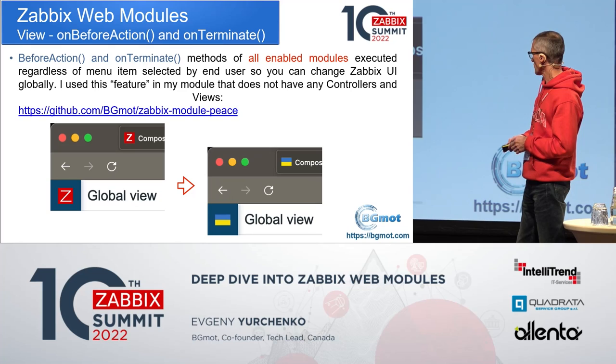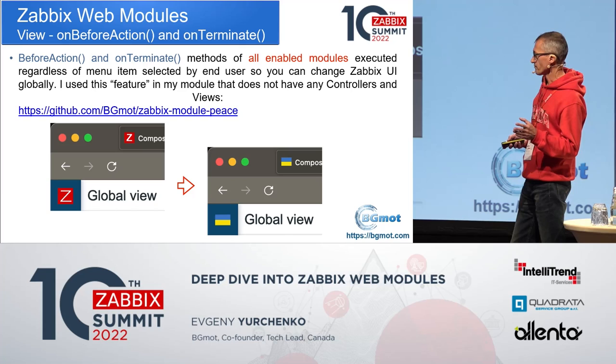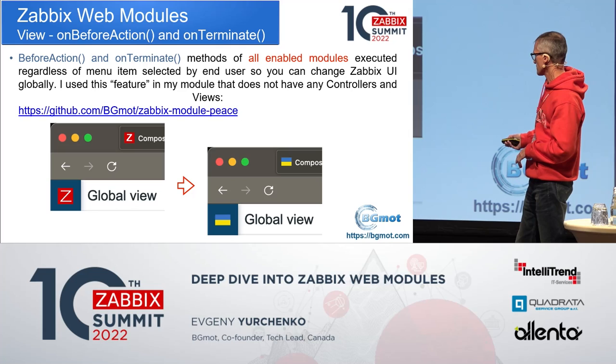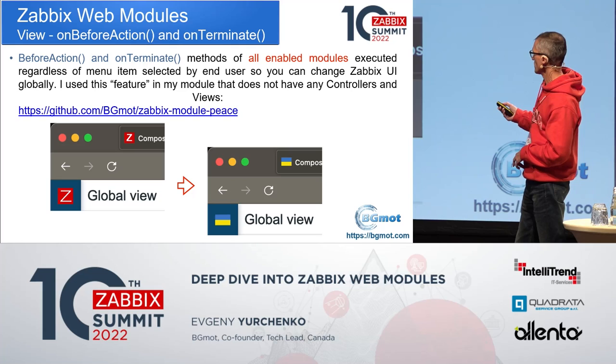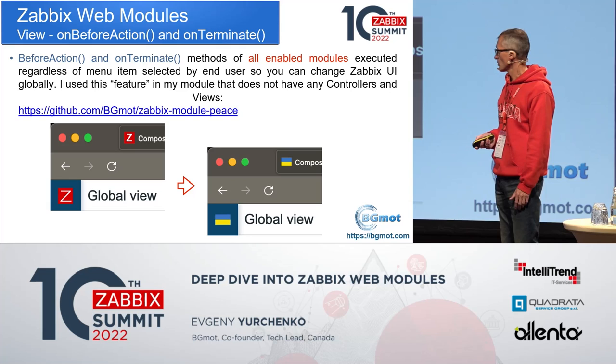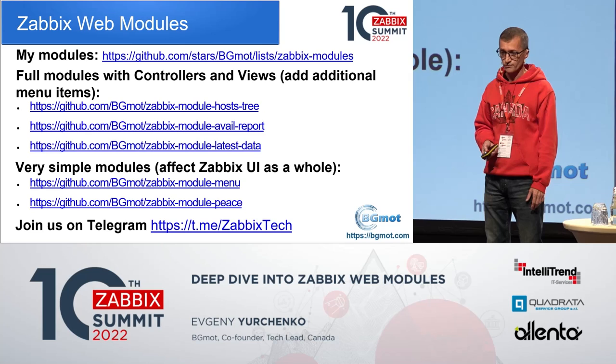For example, I have a very simple module called Peace. I was just wondering how it works. This module doesn't have any controllers or any views — it just has one definition of the onTerminate method, and it changes Zabbix behavior globally. Obviously you can do something similar using rebranding, but you can also use onTerminate to change icons — it's just an example. A very simple module that took me about one hour to develop. All my modules are available on GitHub — it's open source. Feel free to browse, ask questions, and join us on Telegram. It's not only me, it's a bunch of smart people, so if you have any questions, I'm pretty sure you'll find answers.